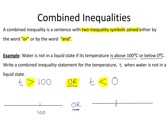Representing this on the number line: T is greater than 100, so 100 is not included but all temperatures greater than 100 are included. Or T is less than 0 — so if this is 0, then 0 is not included but all temperatures less than 0 are included.